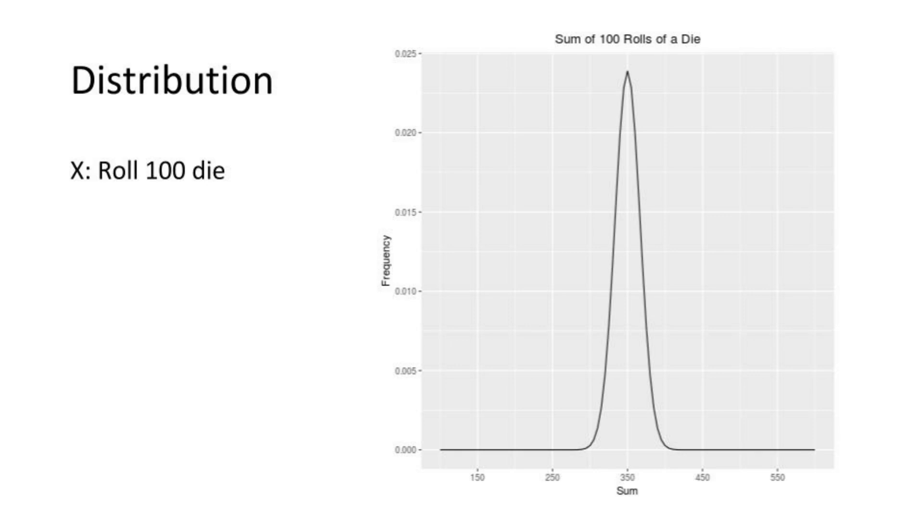Now you can draw out the distribution of your random variable. Your expected outcome of the sum of 100 dice is 350, give or take 16.7 or so.